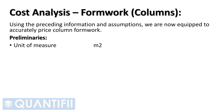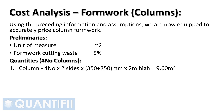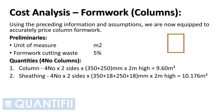Using the preceding information and assumptions, we are now equipped to accurately price column formwork. Preliminaries: unit of measure is square meters; formwork cutting waste assumed at 5%. The applicable quantities for four columns are calculated as follows. Column: 4 × 2 sides × (350 mm + 250 mm) × 2 m high = 9.60 m². Sheathing: 4 columns × 2 sides × (350 + 18 mm sheathing thickness + 250 + 18 mm) × 2 m high = 10.176 m².